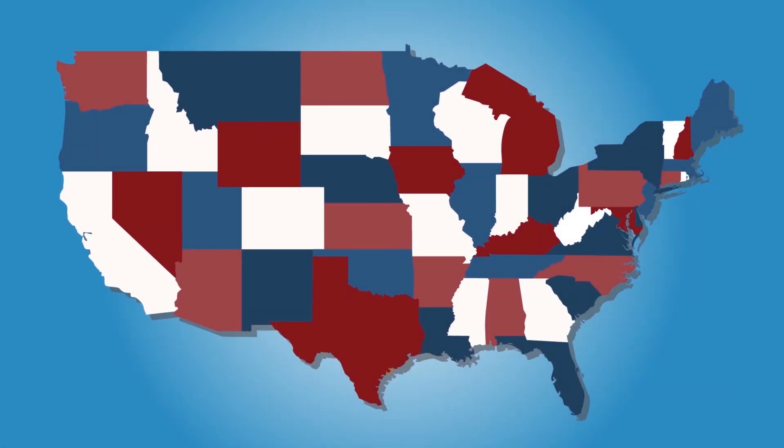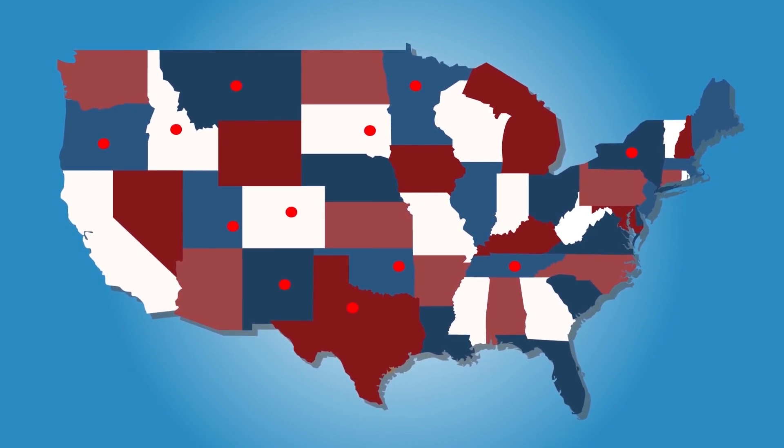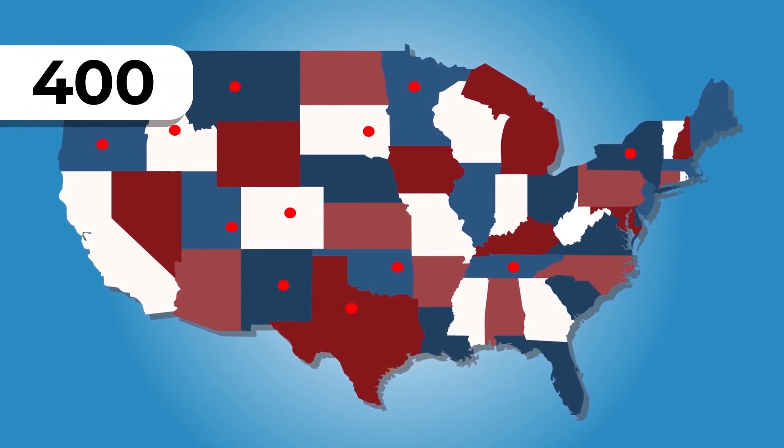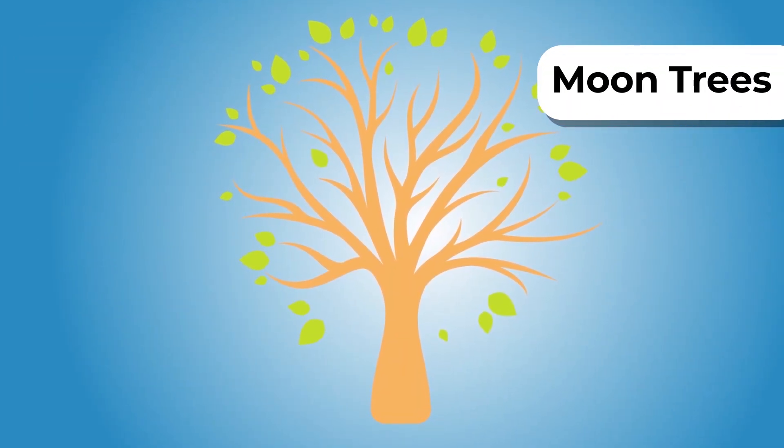They are already among us. Extraterrestrial life scattered throughout the US. They are in other countries too. The existence of about 400 of these space creatures is known thus far.